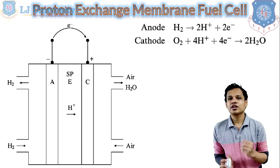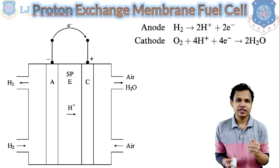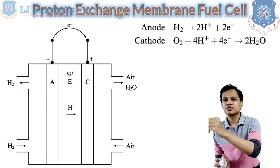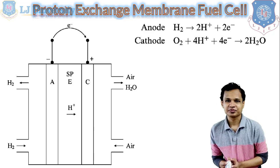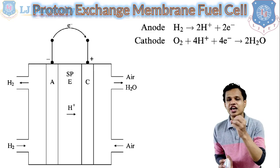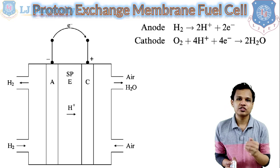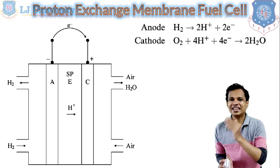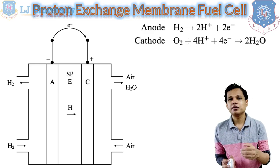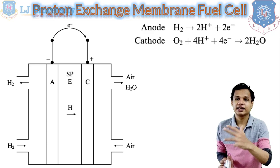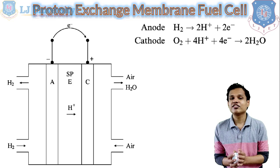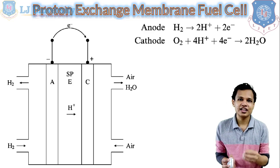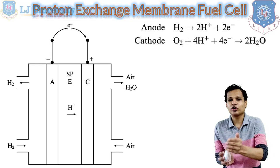The second type is the proton exchange membrane (PEM) fuel cell. In this case, a solid polymer proton exchange membrane is used as the electrolyte. The two electrodes are also solid and made from platinum for both the anode and cathode, as most fuel cells we will see use platinum as anode and cathode.